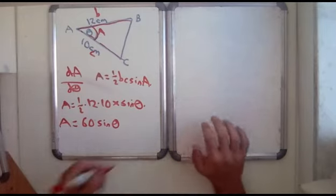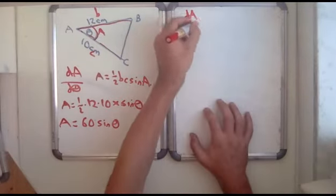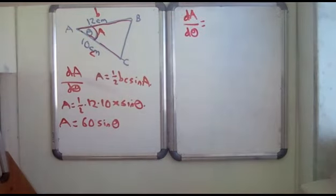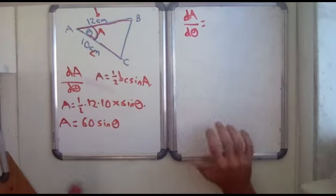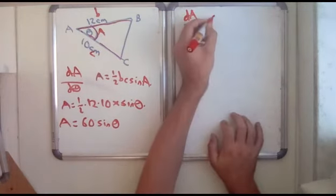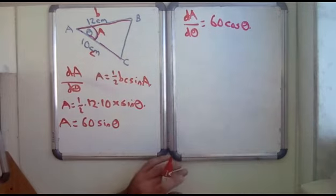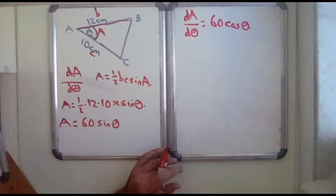So dA by d theta equals—well, the 60 is just the constant that stays outside. Sine theta differentiates to cos theta. So equals 60 cos theta. So the rate of change of area with respect to theta is 60 cos theta. And remember, theta must be in radians.